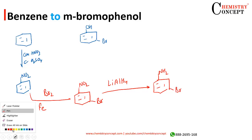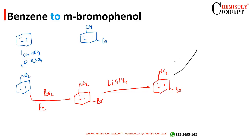After this, treat it with NaNO2 plus 2HCl at 0 to 5 degrees Celsius. We will get a diazonium salt.